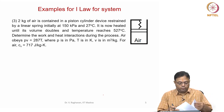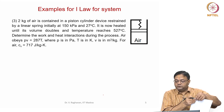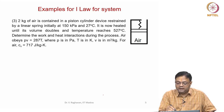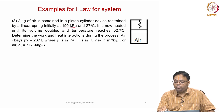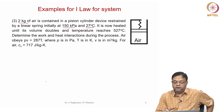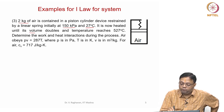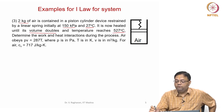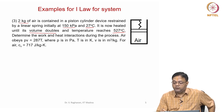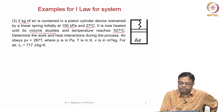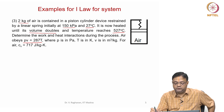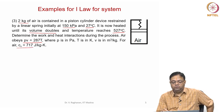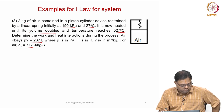Problem number 3: a piston-cylinder device restrained by a linear spring contains 2 kg of air initially at a pressure of 150 kilopascals and temperature of 27°C. It is heated until its volume doubles and temperature increases to 527°C. Determine the work and heat interactions during the process. Air obeys PV = 287T (P in Pascals, T in Kelvin, V in m³/kg) and Cv = 717 J/kg·K.